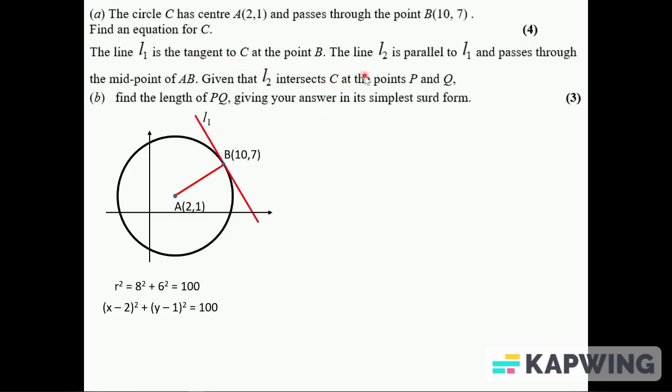Then it says the line L1 is tangent to C at the point B. So L1 looks like this. L2 is parallel to L1 and passes through the midpoint. The midpoint here, I've just drawn the radius inside the circle. L2 intersects C at the points P and Q, and we've got to find the length of PQ giving the answer in simplest form.